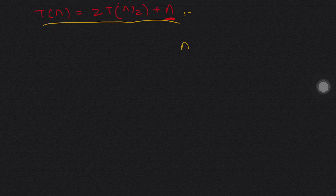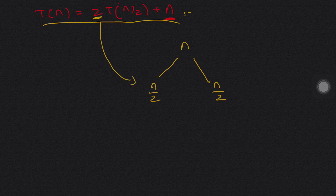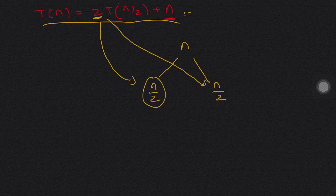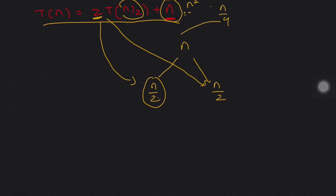So, first n, then n by 2 — two nodes. Here n by 2, here n by 2, n by 2, n by 2. Then n by 4, n by 4, n by 4. This is the recursion tree expanding level by level.